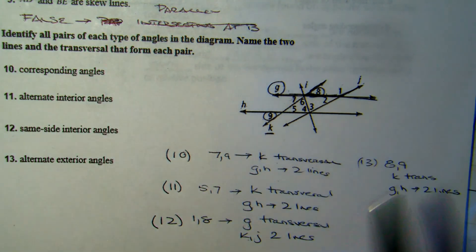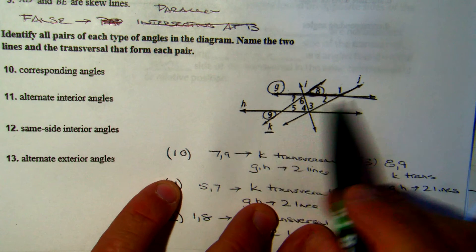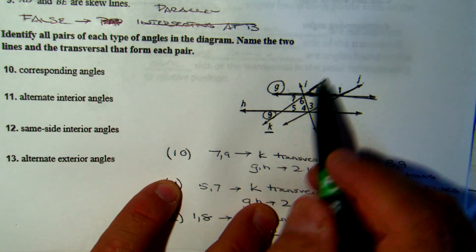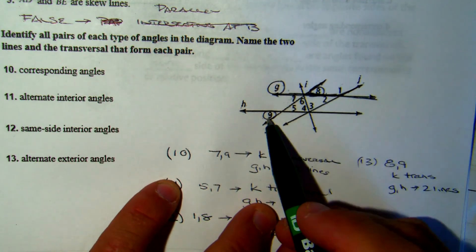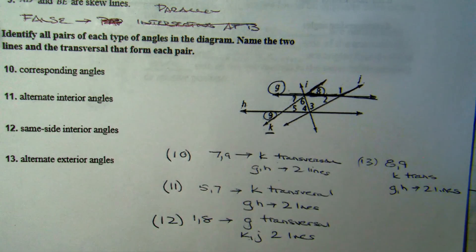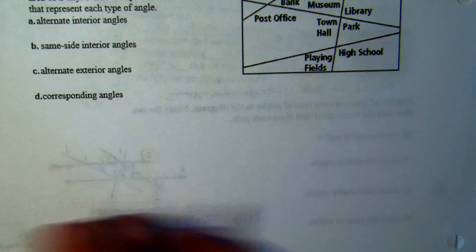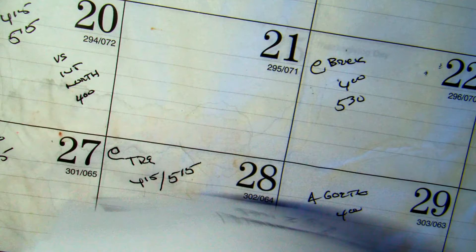Alternate exterior angles: angles 8 and 9 are both outside and on opposite sides, so we return to transversal K and lines G and H.